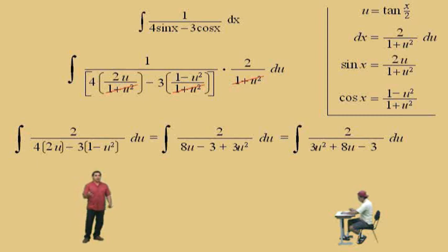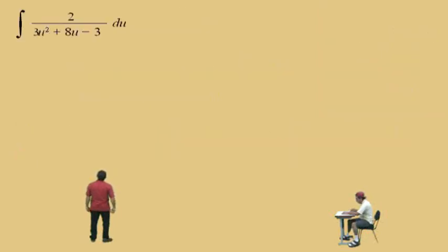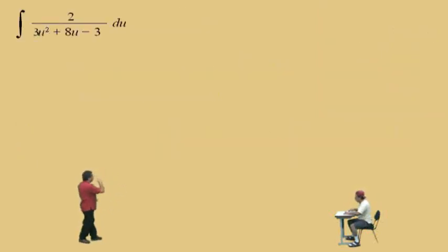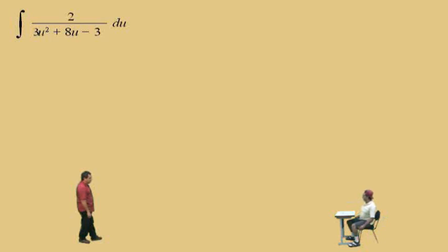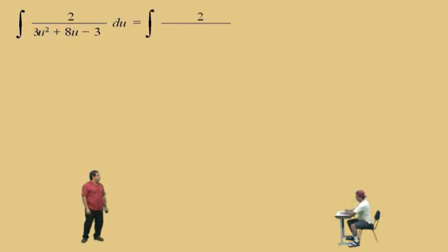We now have a quadratic in the denominator. We have two choices: complete the square, which leads to trig substitution — or hope that the quadratic is factorable, which would allow us to use partial fraction decomposition. We'll check if 3u² + 8u − 3 is factorable and proceed with partial fractions if so.